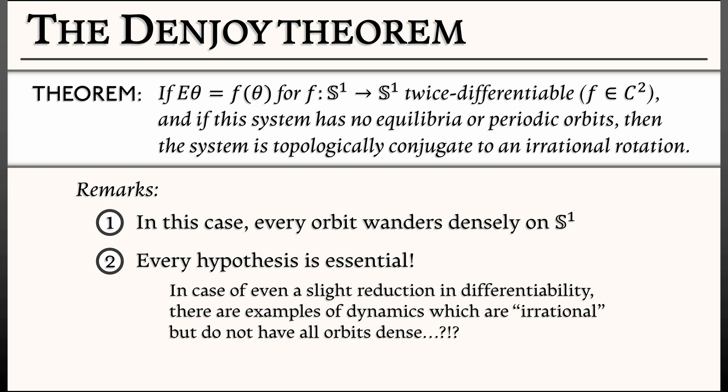then that's it, it all goes away. And there are examples of dynamics which are irrational—no periodic orbits, no equilibria—but they do not have all the orbits dense. Some get squished around. It's kind of hard to visualize, but these things exist.